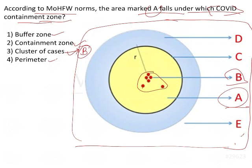So A — by the terminology itself you will know — this is the containment zone. That is our answer. Coming to C, C is the perimeter.